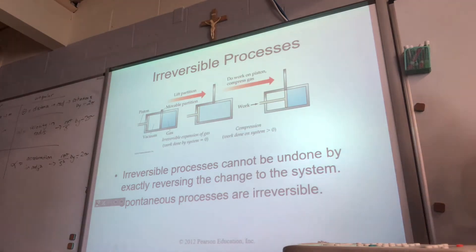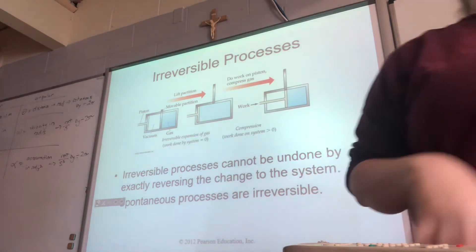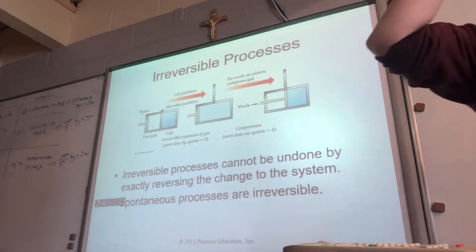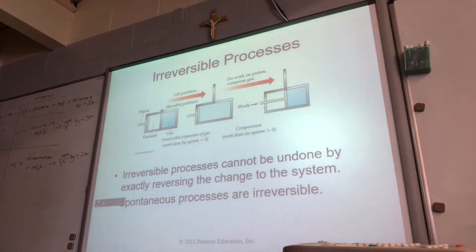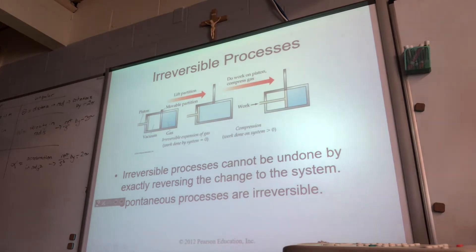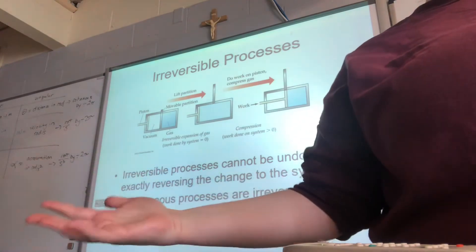Next is what we call an irreversible process—things that really just cannot go back to what they were. One example is gas spreading: when a gas is in two different containers and we remove the barrier, the gas mixes into both sides pretty evenly. We can't really undo that. Most spontaneous processes, if they are truly spontaneous, are going to be irreversible. Irreversible means we're not putting it back—think the egg dropping and cracking; that's not going backwards.